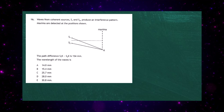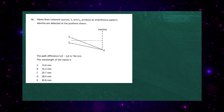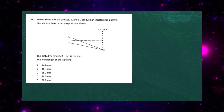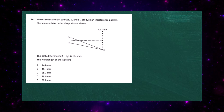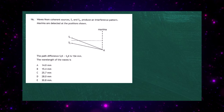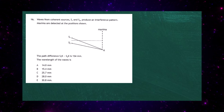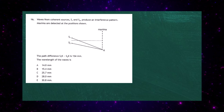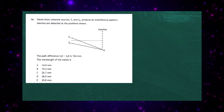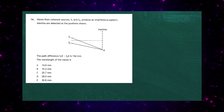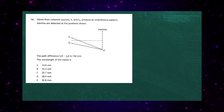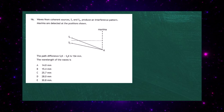Question 16 from the 2023 Higher Physics Examination Paper 1. Waves from coherent sources S1 and S2 produce an interference pattern and maxima are detected at the position shown. We're told that the path difference S1K to S2K is going to be 154mm and we're asked to find the wavelength of the waves.